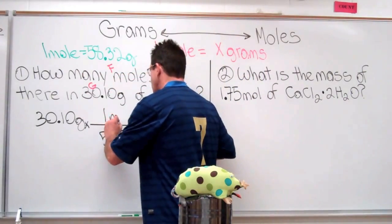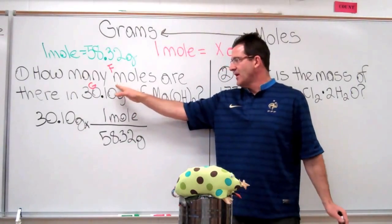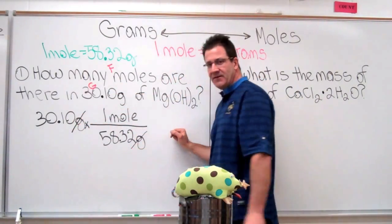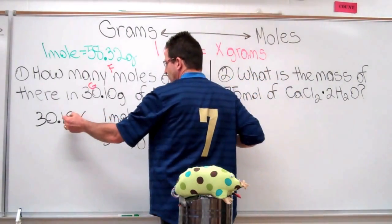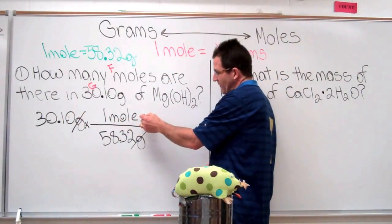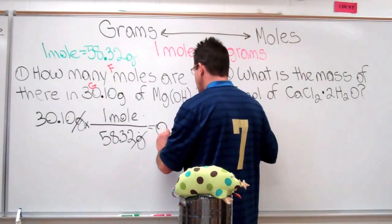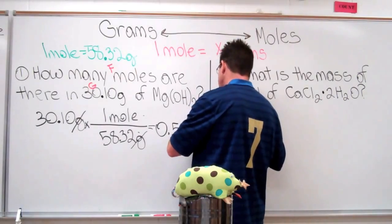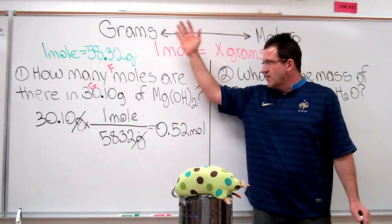That being one mole. And you will see, we want to find out how many moles we have. We've been given grams. Our grams will cancel like this. We're left with moles. And if we multiply 30.10 times 1 divided by 58.3, we end up with 0.52 moles. Okay? That's all there is to it. It's not that complicated.